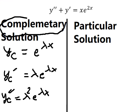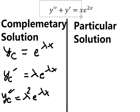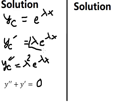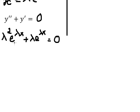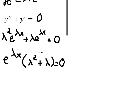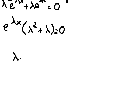Because this is the complementary solution, this equals zero. So I will substitute these in. We can do factorization — factorization of e to the power of lambda s. Now we need to find the solutions, and we can factor by lambda.